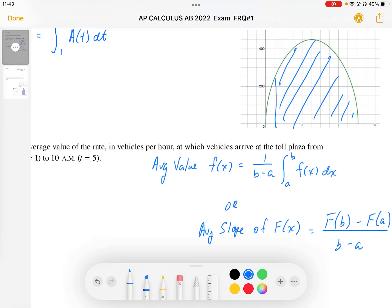We take the area under the rate function and divide it by the interval value of b minus a.